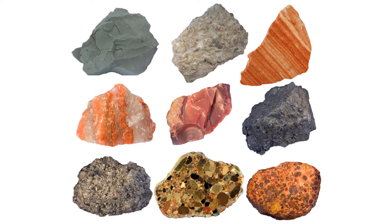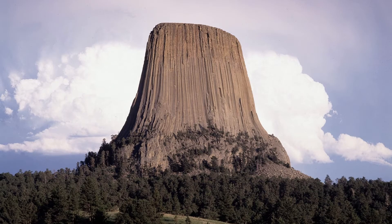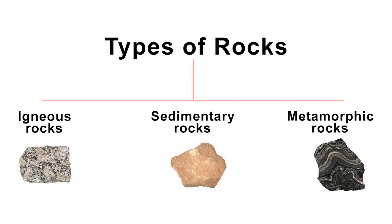You have probably heard that there are three types of rocks: igneous rocks, sedimentary rocks, and metamorphic rocks. These rocks have different physical properties because they have different origins.